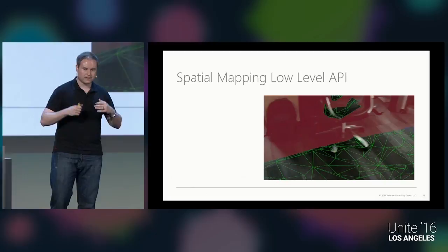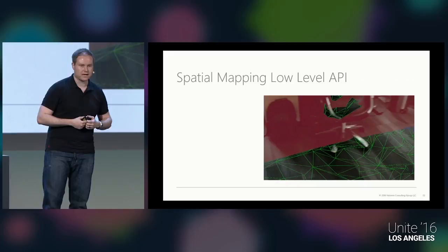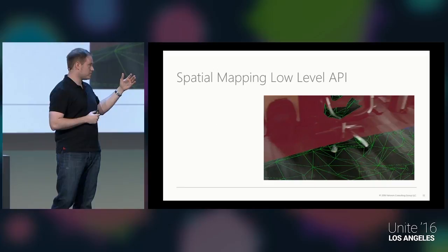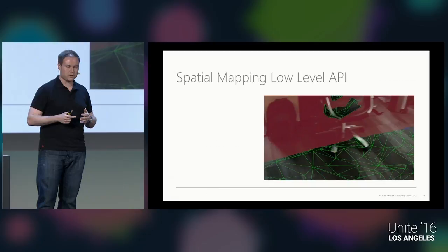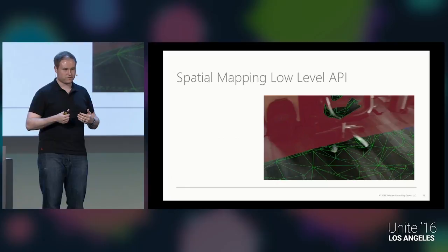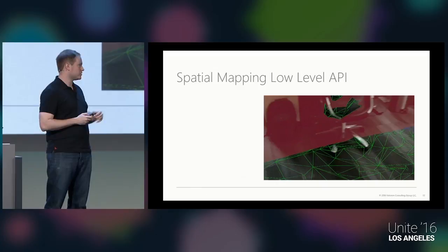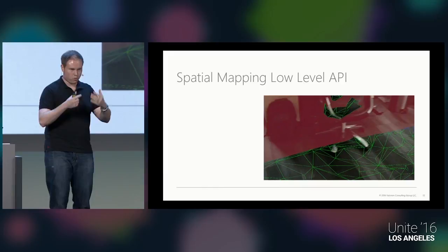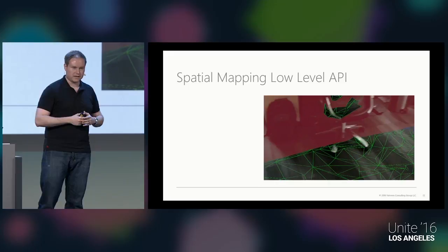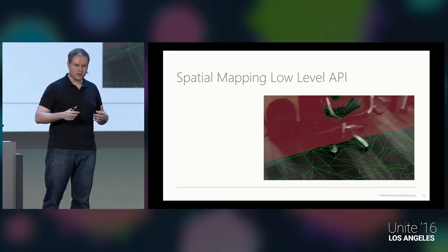Unity also provides a low-level scripting API for maximum control over spatialized data — in fact, the spatial mapping components use this same API. However, if you use it directly you're responsible for managing the surface lifecycle, prioritizing, and generating mesh data yourself. You work with the SurfaceObserver object — a 3D bounding volume that reports surface changes to you. Before going that route, I'd encourage you to first try the spatial mapping components because they just work and are easy to extend.